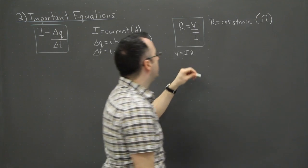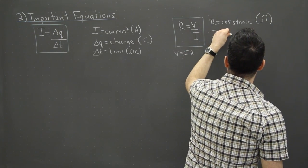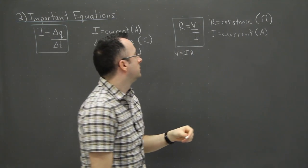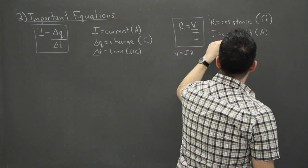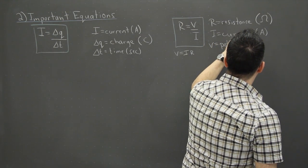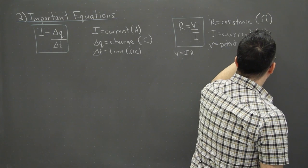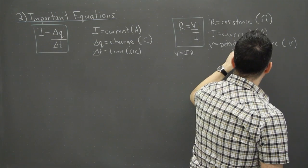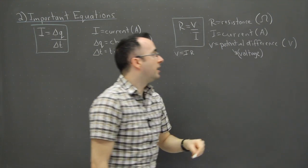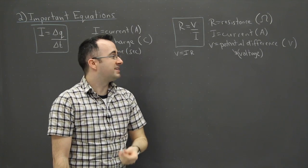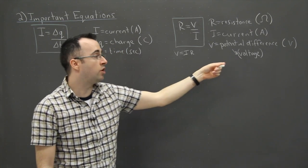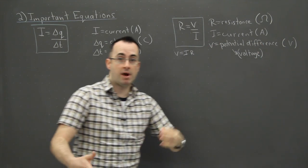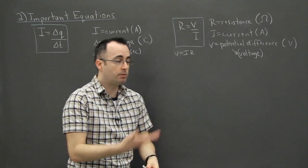So that's ohms. I is the current, measured in amperes — some people just call it amps for short. And then we have V, which is the potential difference, measured in volts. A lot of people call it voltage, but on IB exams you'll almost always see it called potential difference. So whenever you see 'potential difference,' just think: that's the voltage.